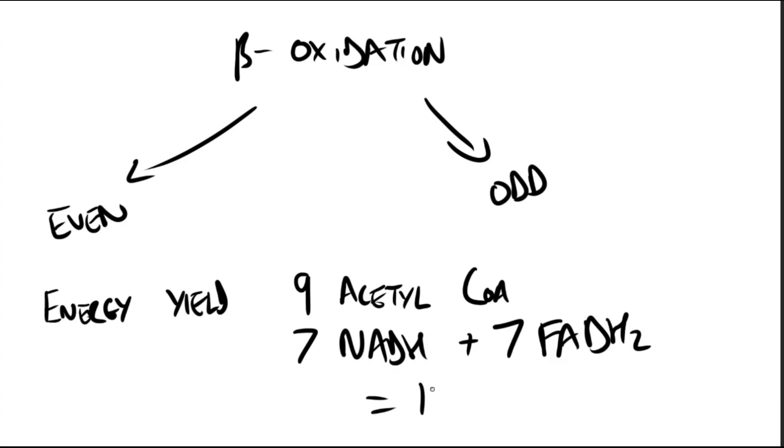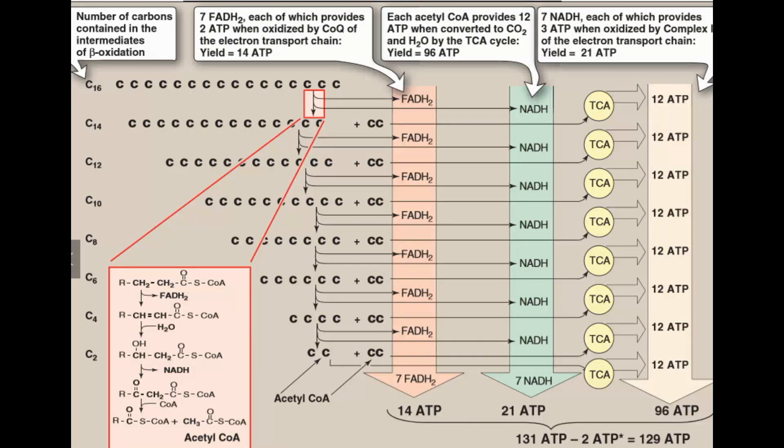Therefore, the net yield is 129 ATP. I will show you how. From previous videos, you know that one molecule of NADH will give us three molecules of ATP. So here we have seven, and hence we have 21 ATPs. One molecule of FADH2 will give us two ATPs, so seven will be 14 ATP. From the citric acid cycle, we know it's going to give us 12 ATPs, and this will equal 129.